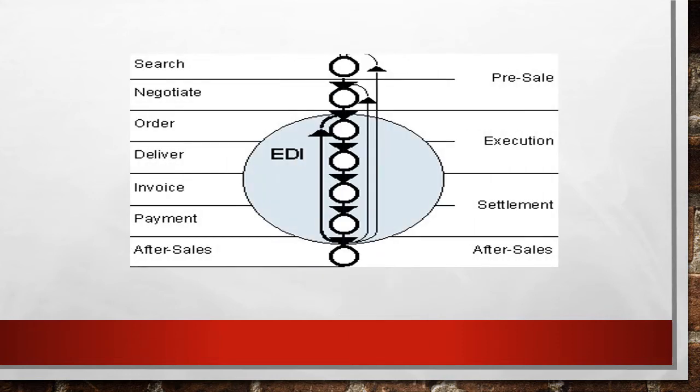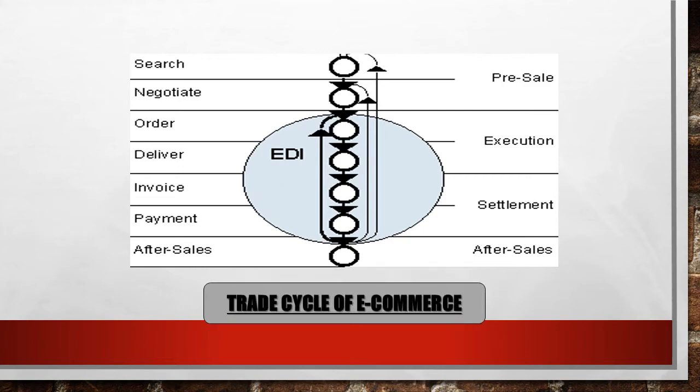This is the diagram of the e-commerce trade cycle. You can see that there is EDI — that is, electronic data interchange — whose role is to exchange data appropriately from one place to another. In this diagram, pre-sale is divided into two parts: research and negotiate. Execution consists of order and delivery. Settlement has invoice and payment. After-sales covers the characteristics that come after the sale. We will now study each phase in detail, starting with pre-sales.